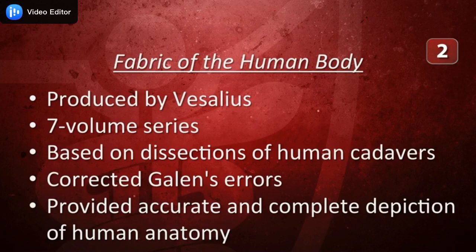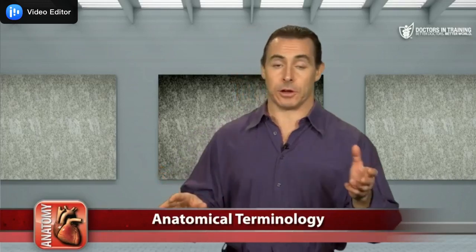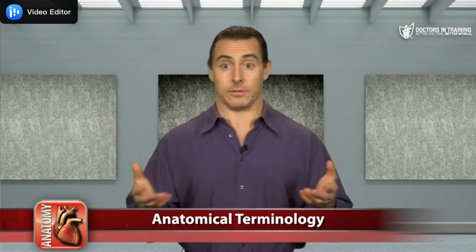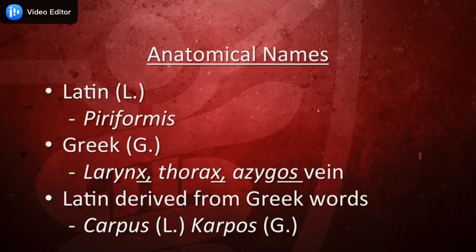Unfortunately, many of Galen's extrapolations from animals to humans were inaccurate. It wasn't until 1500 years later that Vesalius produced an intricately illustrated seven-volume series titled The Fabric of the Human Body, based on his extensive dissections of human cadavers in Italy, that corrected Galen's errors and provided a very accurate and complete depiction of human anatomy. Vesalius named anatomical structures in Latin, and Galen named them in Greek. Today, the anatomical names we use are a collection of Latin names, like piriformis, which is a muscle acting on the hip joint, and Greek names, which often end in X, like larynx and thorax, or os, like the azygous vein.